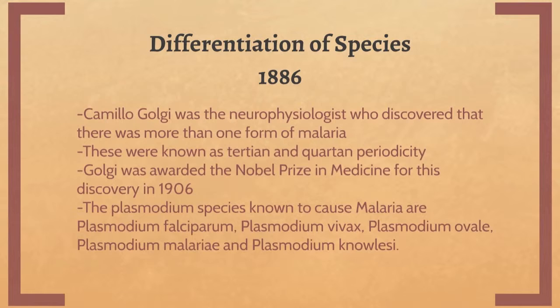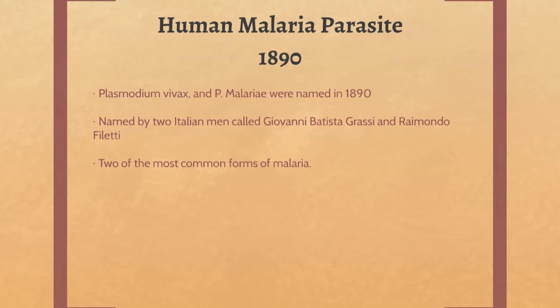Camilo Golgi was the neurophysiologist who discovered that there were multiple forms of malaria. The plasmodium species known to cause malaria are Plasmodium falciparum, Plasmodium vivax, Plasmodium ovale, Plasmodium malariae, and Plasmodium knowlesi. In 1890, Giovanni Battista Grassi and Raimondo Filetti named two of the plasmodium parasites: Plasmodium vivax and P. malariae.